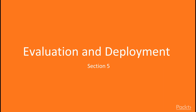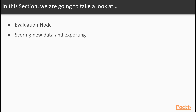The key aim is to determine if there is some important business issue that has not been sufficiently considered. At the end of this phase, a decision is going to be made on how to use the data mining results. In this section, we're going to take a look at how to use the evaluation node, which will help us with the general phase of evaluation. We're also going to talk about how to score new data and how to export those results to another application, which will help us with the general phase of deployment.